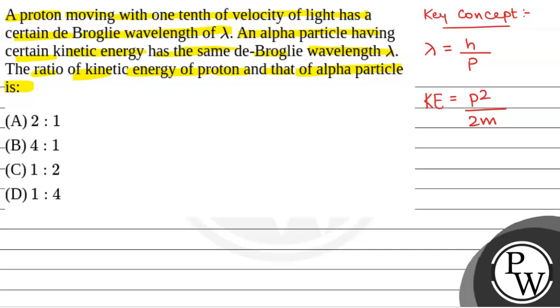So we have p equals h by lambda, and momentum equals h by lambda. Lambda is the de Broglie wavelength. So kinetic energy will equal h squared by 2m lambda squared. This will be the formula for kinetic energy.